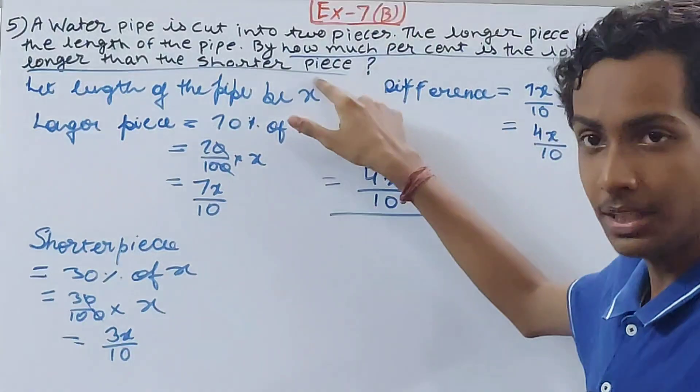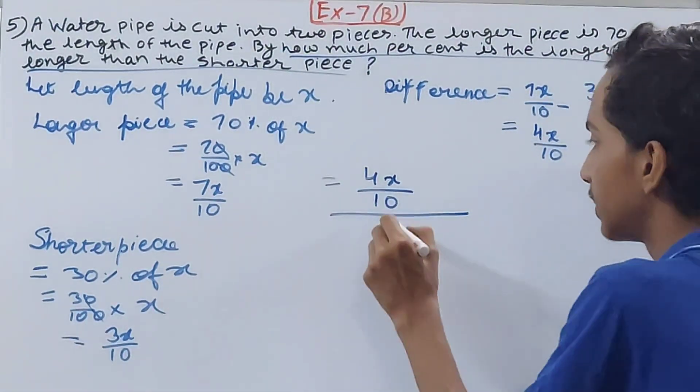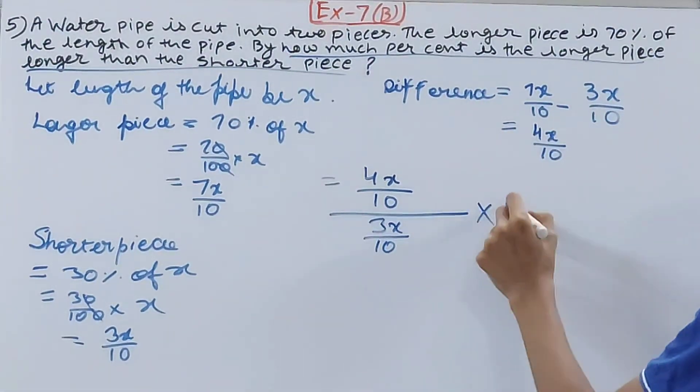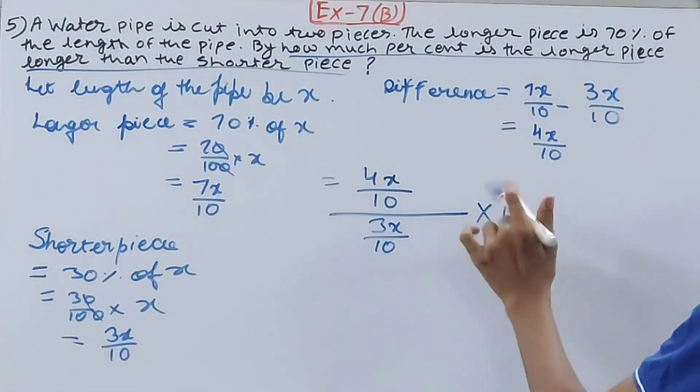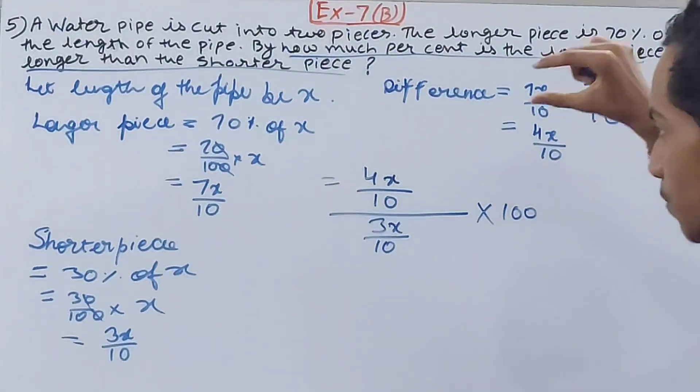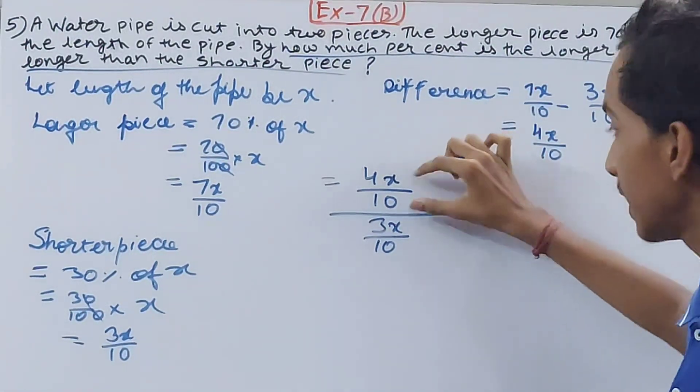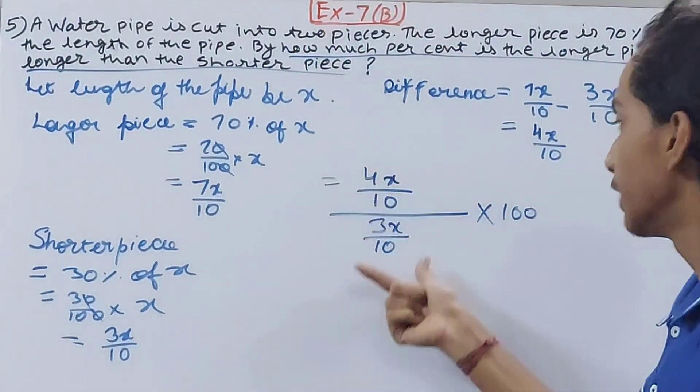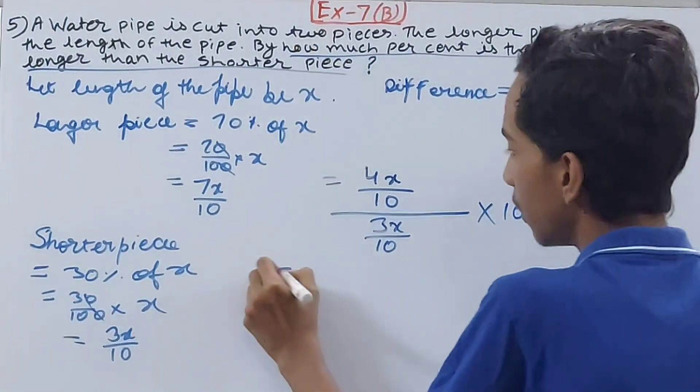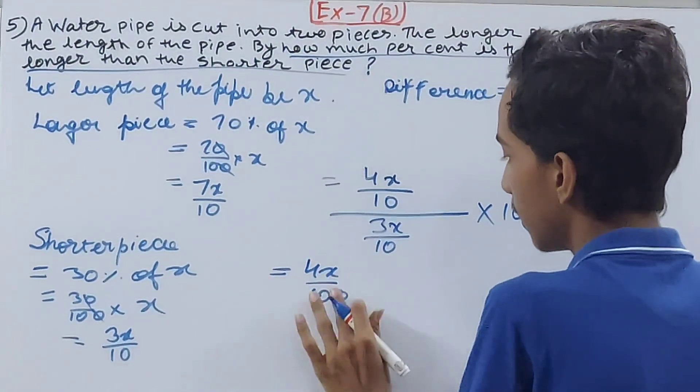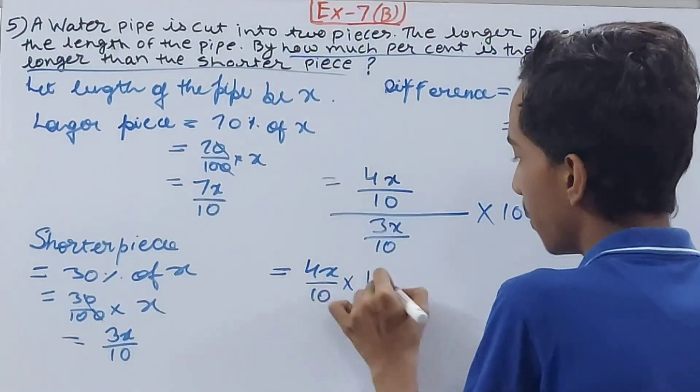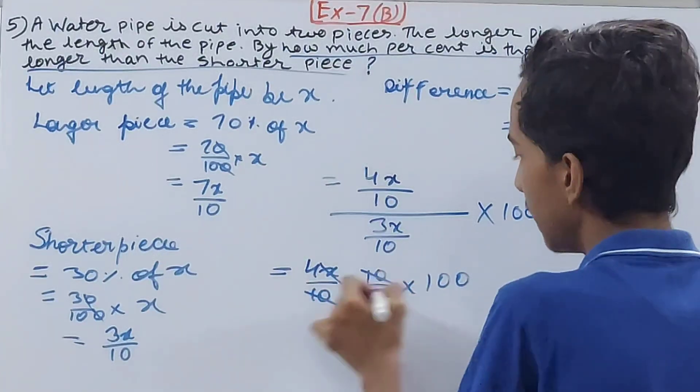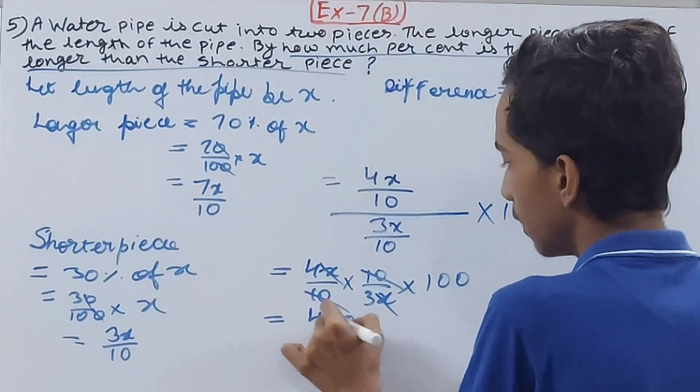"Longer than the shorter piece" is written, so put the length of the shorter piece in the denominator, that is 3x/10. Now it is percentage, so you multiply by 100. Now we will solve this: 4x/10 × 10/3x × 100. x and x cancel, 10 and 10 will cancel, so 400/3 percent.